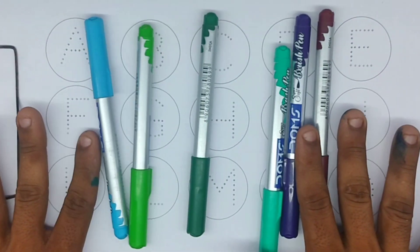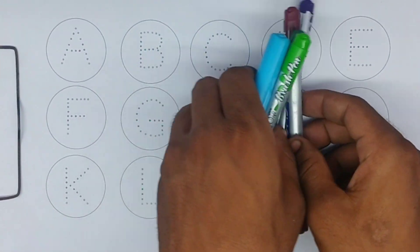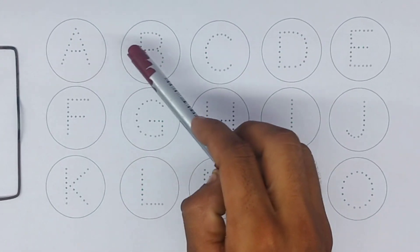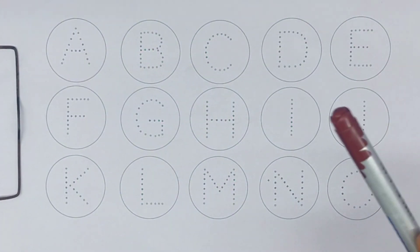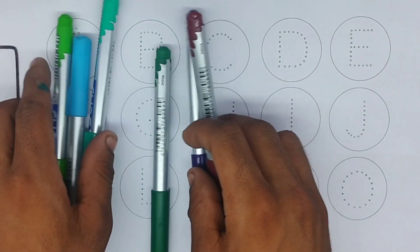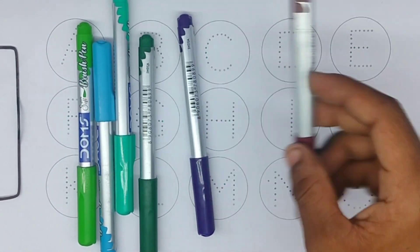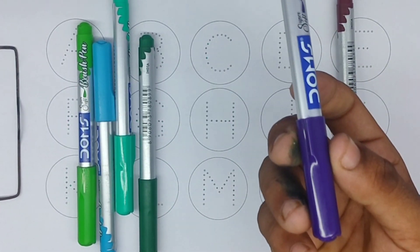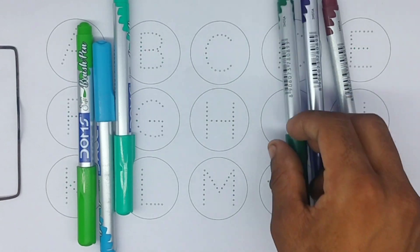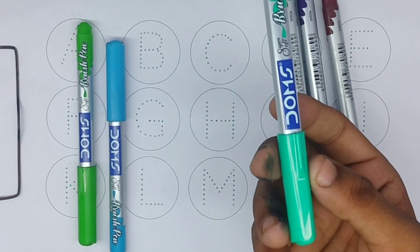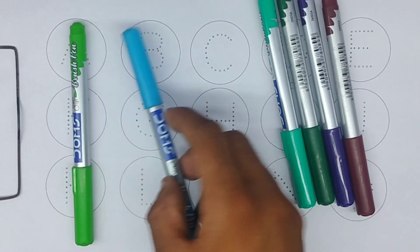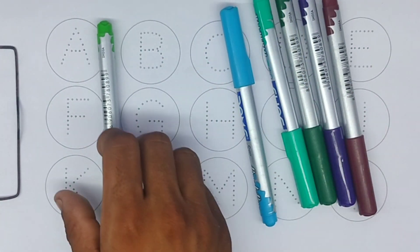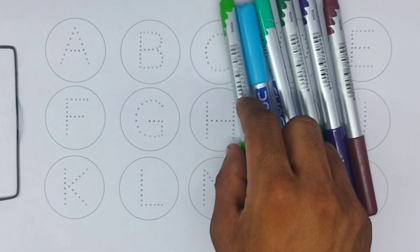Hello kids, how are you today? Learn alphabet A, B, C, D, E. Colors name: brown color, purple color, green color, light blue color, sky blue color, parrot color.